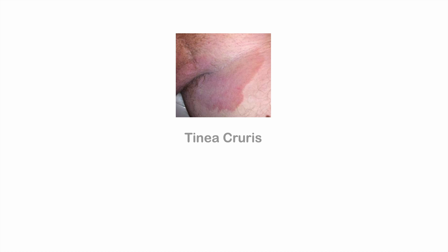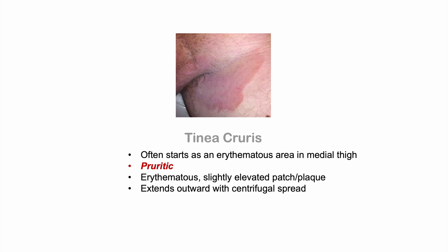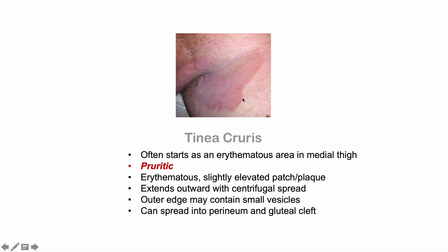So what does it actually look like? Tinea cruris often starts as an erythematous area in the medial thigh — that's the inner thigh — and it is pruritic, meaning itchy, which is where the name jock itch comes from. It could be a flat patch or a slightly elevated plaque. It starts to extend outward with a centrifugal spread, and the outer edge of the lesion might have small vesicles on it.